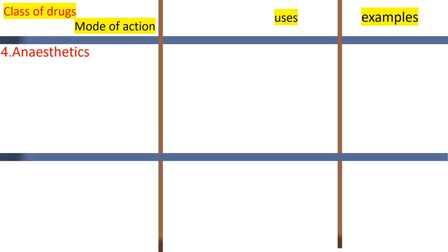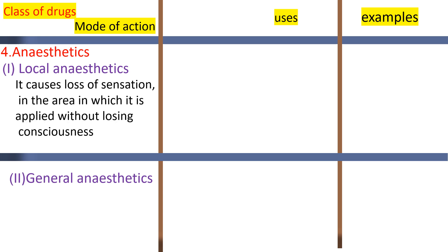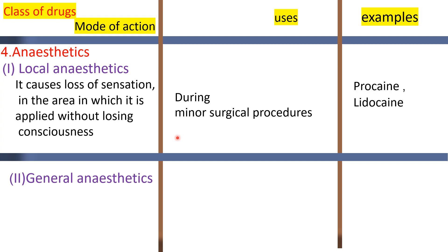Anesthetics include local anesthetics and general anesthetics. Local anesthetics cause the loss of sensation in the area to which they are applied, without loss of consciousness. This is used during minor surgical procedures. The example of a local anesthetic is procaine.